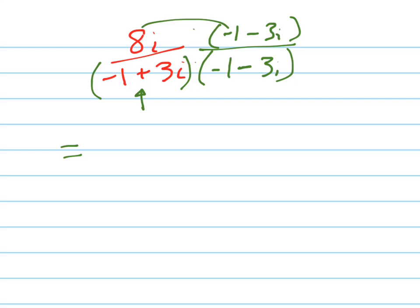So let's do that, negative 8i, minus 24i squared. Now that's going to turn into a negative 1, so that's going to become a positive 24.